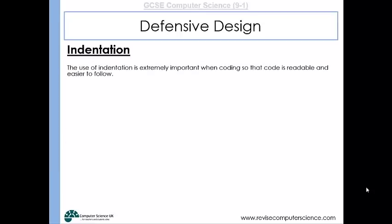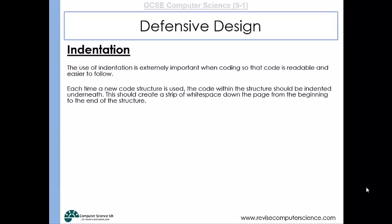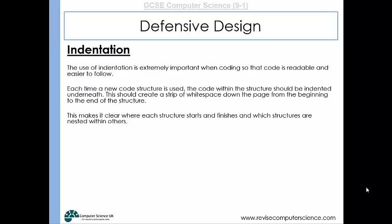Indentation is another really important feature. It makes code easier to follow and easier to read. Each time you have a new code structure — for example an if statement or a loop — you should have an indentation. Now Python forces you to indent, but not all programming languages do. So if you're writing another programming language, you should still indent to make sure it's very clear what's going on. If the code is clear and easy to read, then someone else — or yourself coming back to your code after a few months — is less likely to introduce bugs and mistakes, making it a much more robust program.